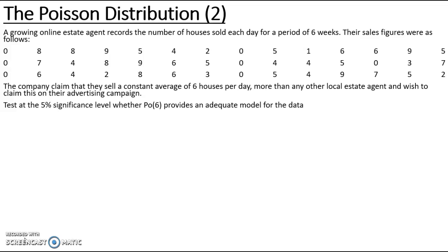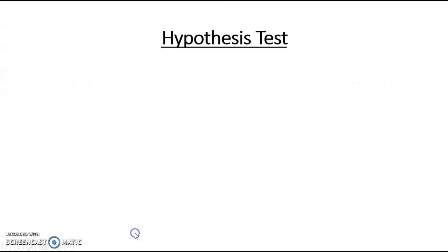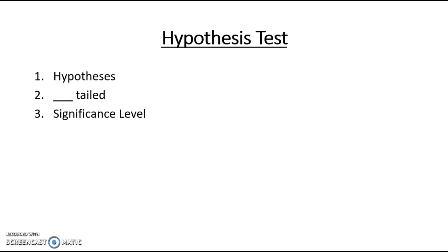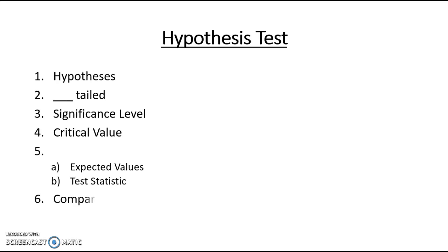When looking at doing a hypothesis test we should follow 7 steps. The first is that we need our hypotheses. The second and third are we need to know if it is one or two tails and the significance level. The fourth step is calculating the critical value. Then for our test statistic we need our expected values first, and then we compare the test statistic with our critical value and make a conclusion based on that comparison.